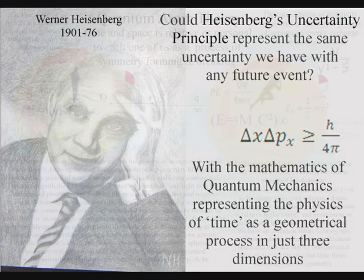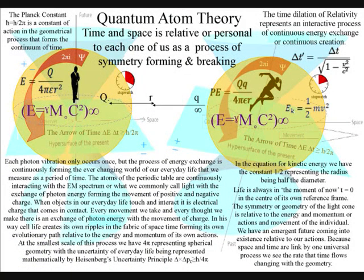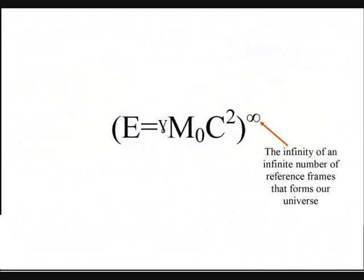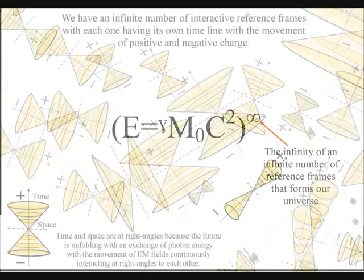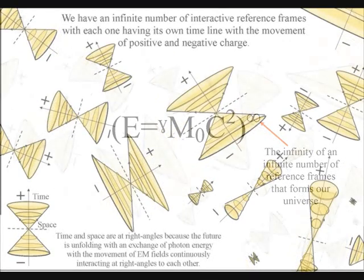The brackets in the equation represent a dynamic boundary condition of an individual reference frame with an arrow of time for each frame of reference. The infinity symbol represents an infinite number of dynamic interactive reference frames that are continuously coming in and out of existence.